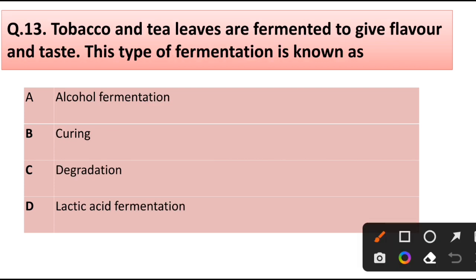Question number 30. Tobacco and tea leaves are fermented to give flavor and taste. This type of fermentation is known as: alcohol fermentation, curing, degradation, or lactic acid fermentation. Correct answer is option B, curing.